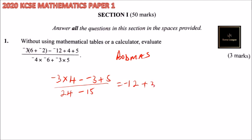All this is divided by 24 minus 15, that is 9. So this equals minus 12 plus 3, and that will give you minus 9. Minus 9 plus 4, that will give you minus 4 divided by 9.